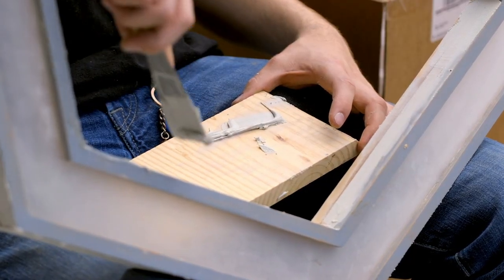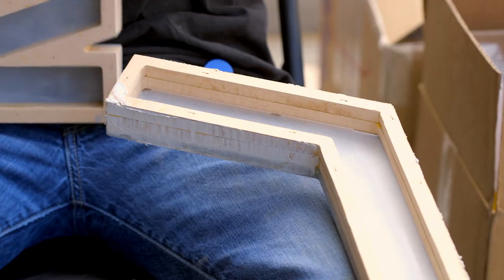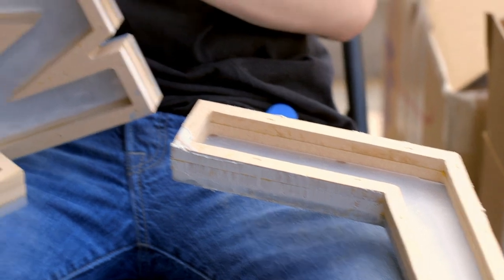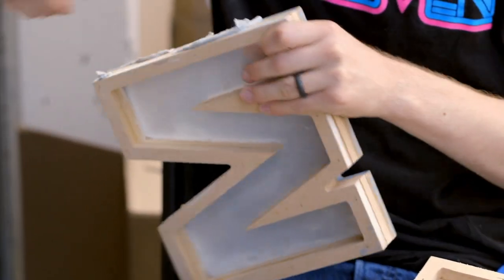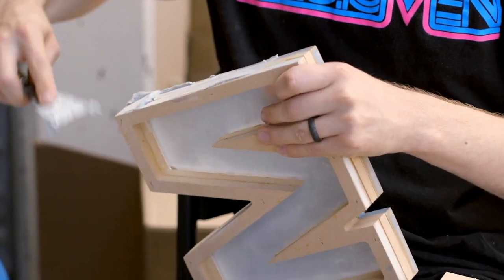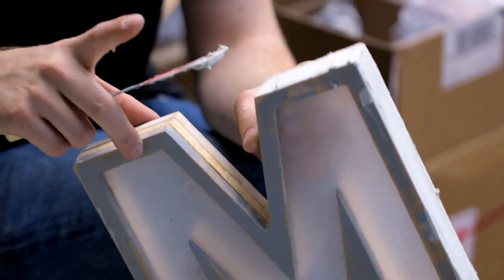Now with all the pieces sandwiched together, it was back to the wood filler, putting some on the outer edges, sanding it, putting on some primer, sanding it again, and just going back and forth until I could get a nice smooth surface on all of the outside edges.